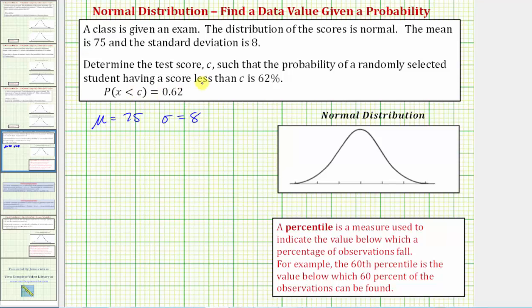We're asked to determine the test score c such that the probability of a randomly selected student having a score less than c equals 62 percent. We can express it using this notation where we say the probability of x less than c equals 0.62.